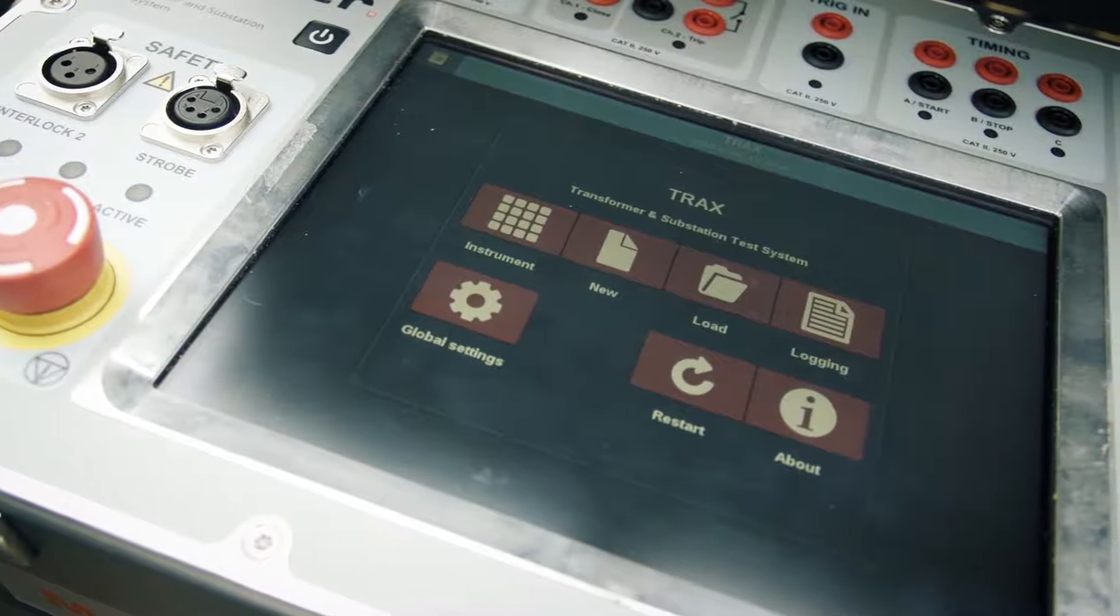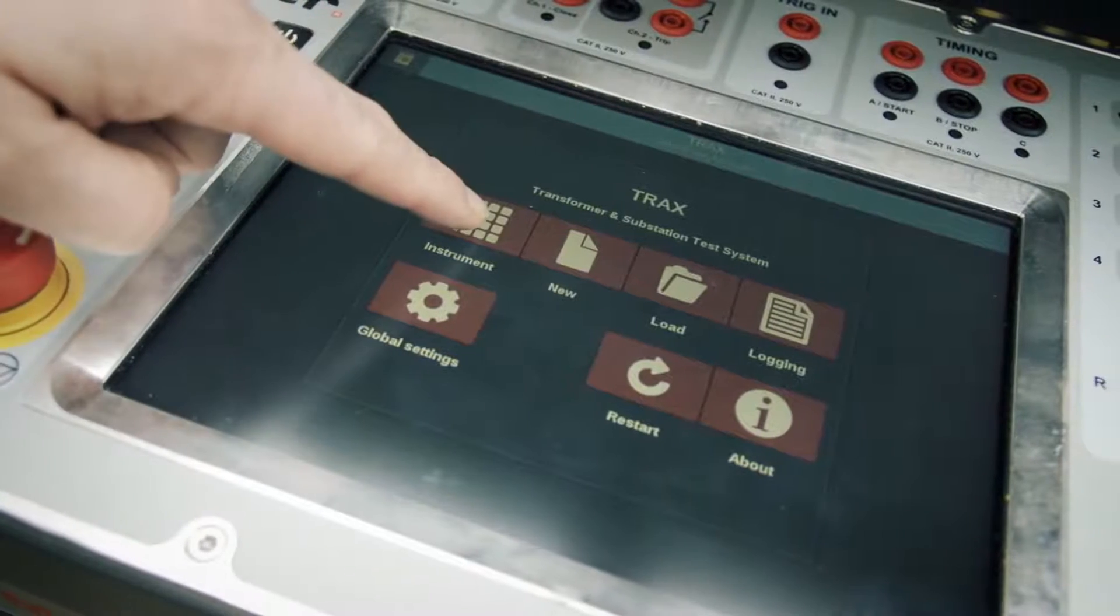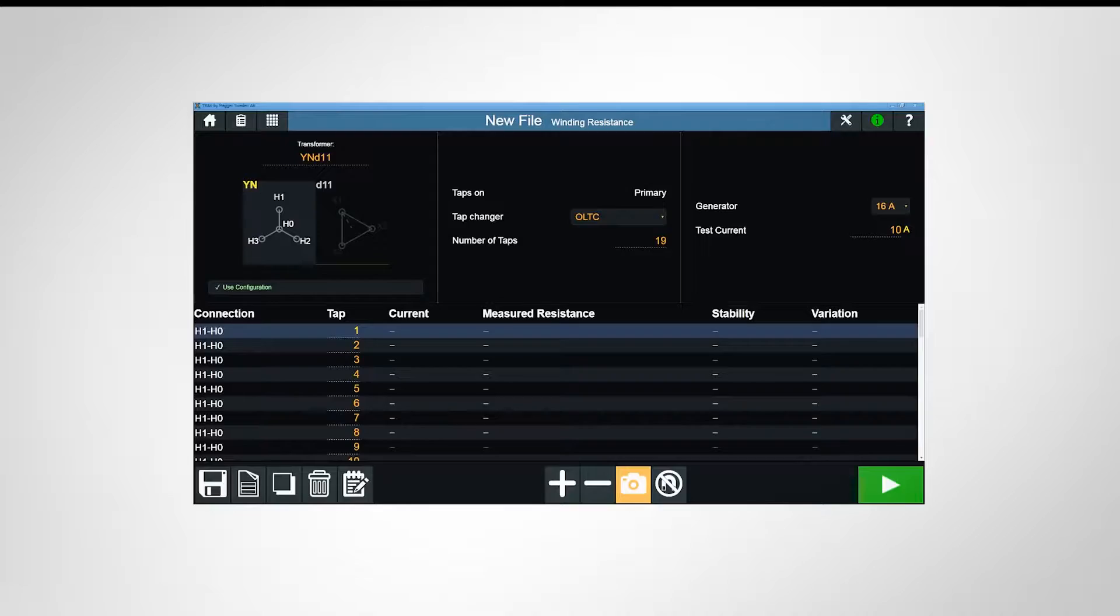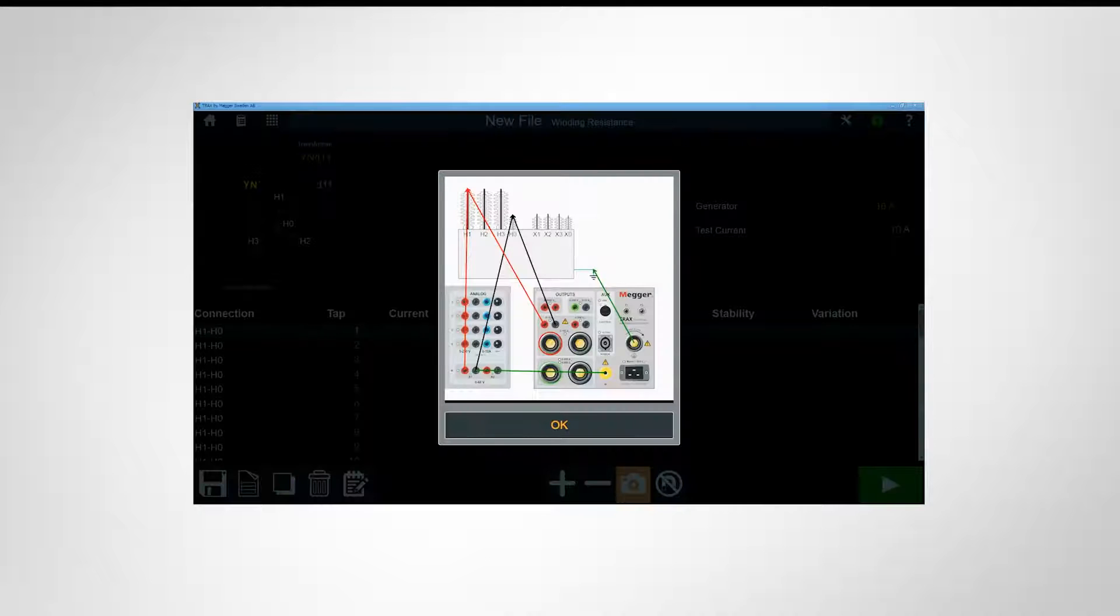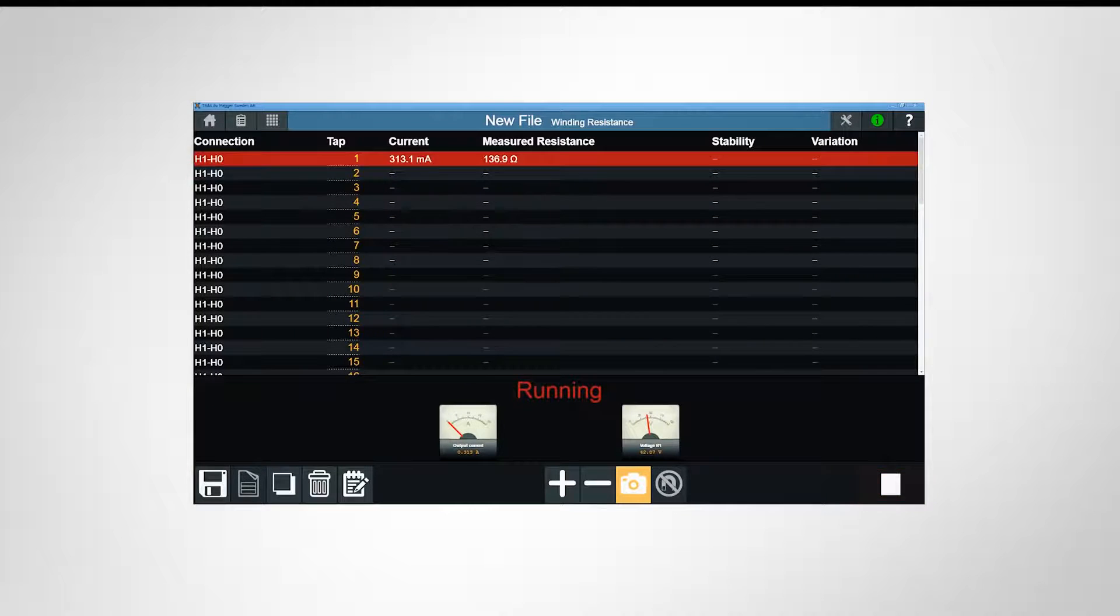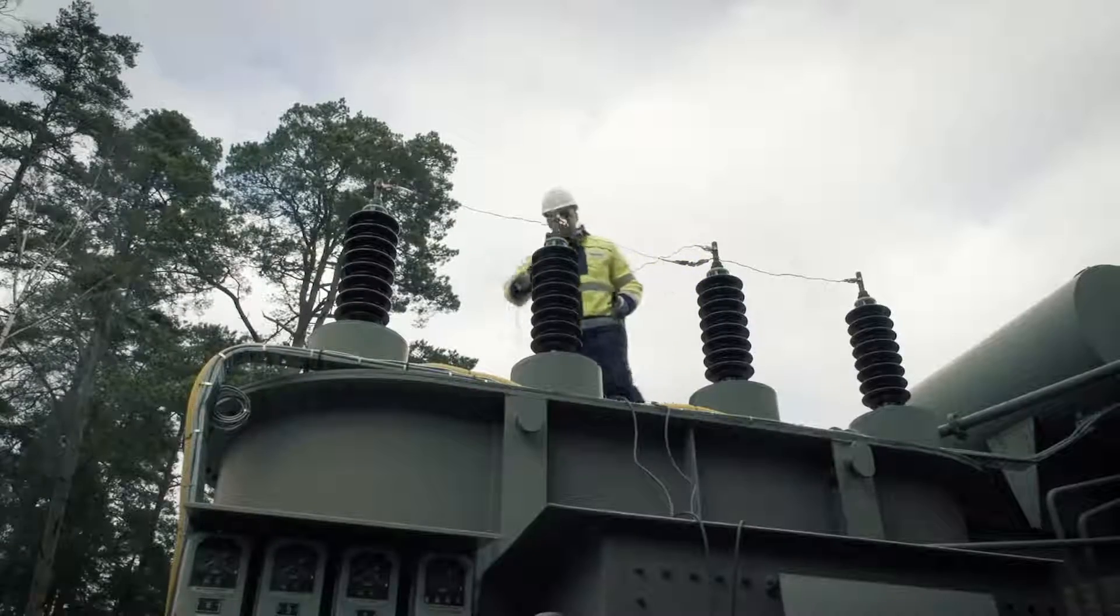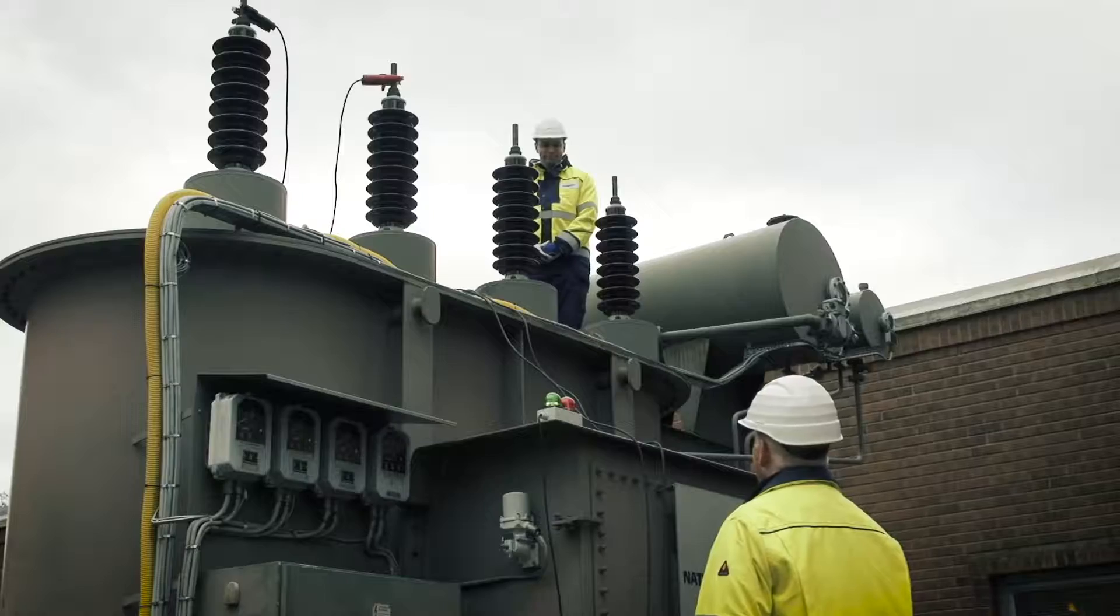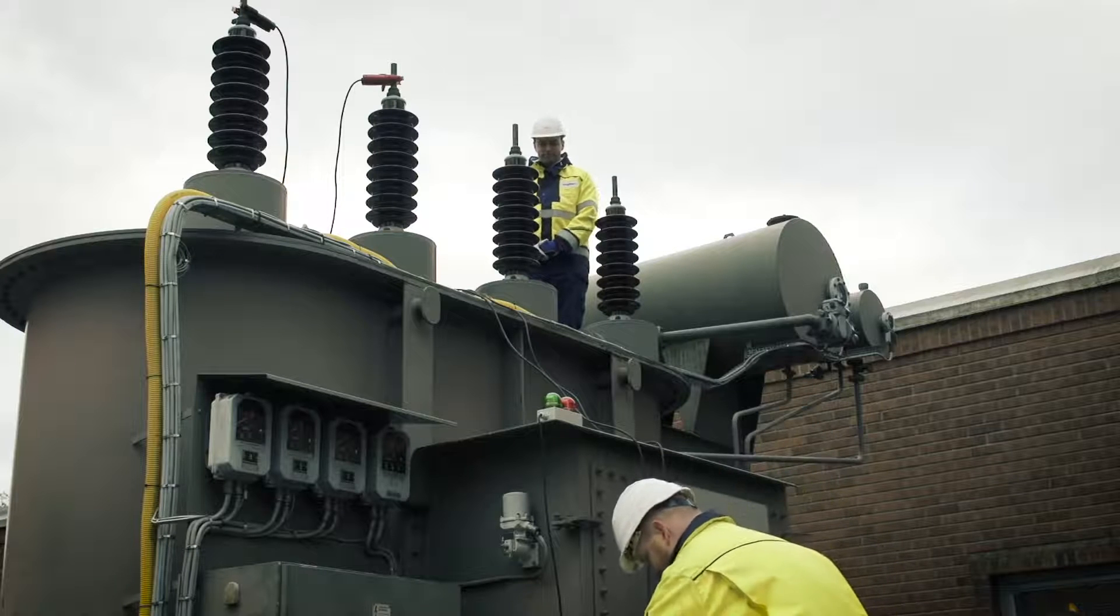TRAX is easy to learn and use with a single interface architecture for all tests, reducing user training costs by using a different app for each instrument. The appropriate connection diagrams are provided and only the necessary functionality is displayed, making each test simple and time efficient. It also provides full manual control for custom defined measurements.